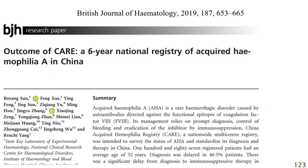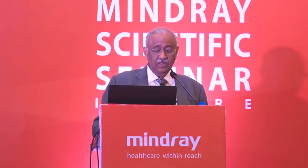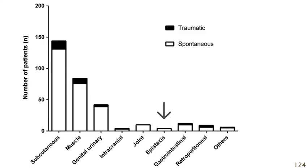A recently published paper — the CARE study, a six-year national registry from China — showed beautifully that the clinical picture of acquired hemophilia is dominated by spontaneous subcutaneous bleeding, then muscle bleeding, then genitourinary tract, then intracranial, and joint bleeding is the rarest. This is the commonest presentation: subcutaneous and muscles.